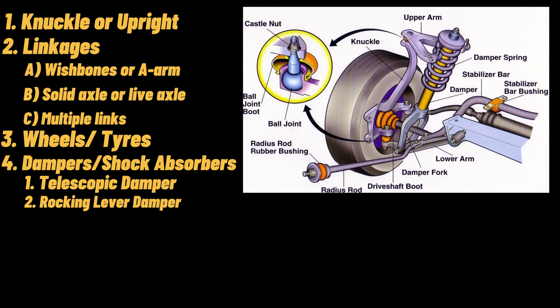2. Rocking Lever Damper. Rocking lever dampers work on the same principle as telescopic dampers. But in this case, two pistons are used inside a single cylinder, and oil is displaced through the valve. The movement of the dual pistons takes place due to the motion of the wheels, which are moved onto the pistons and into the rocker levers.